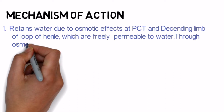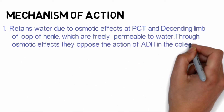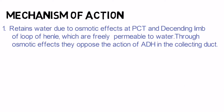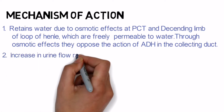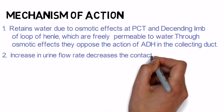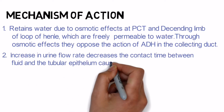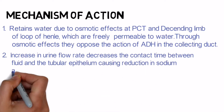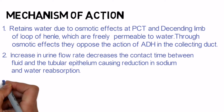Through osmotic effects, mannitol opposes the action of ADH in the collecting duct. As a result, urine volume increases. The increase in urine volume increases urine flow rate, which decreases the contact time between fluid and the tubular epithelium, causing reduction in sodium and water reabsorption. The resulting natriuresis is of lesser magnitude than water diuresis, which causes increased sodium in the body and hence hypernatremia.